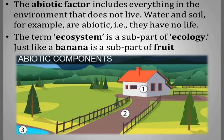Abiotic factors include everything in the environment that does not live — non-living things. For example, water, soil, a house, a road, a water body — these are all non-living things and are classified as abiotic factors.